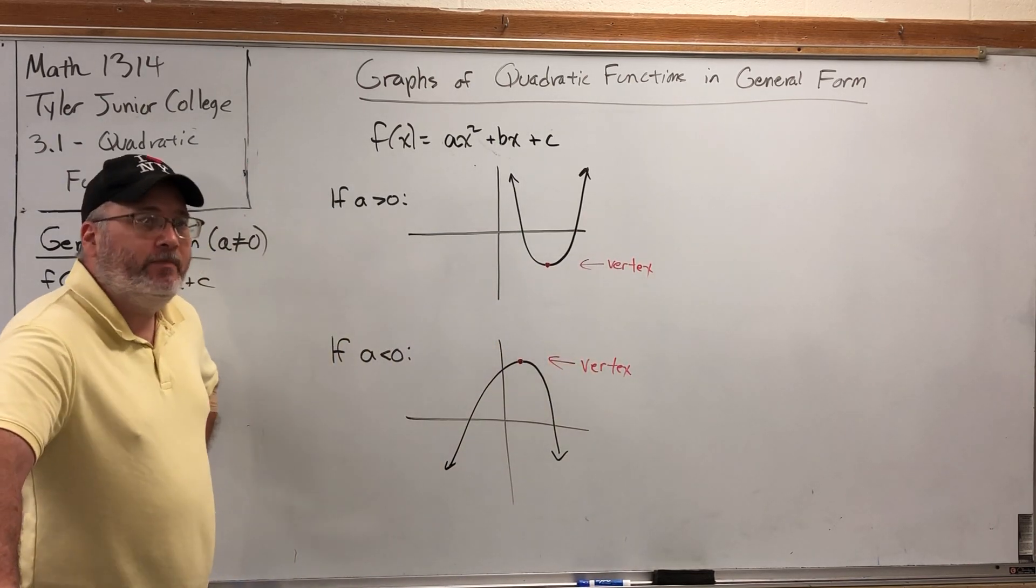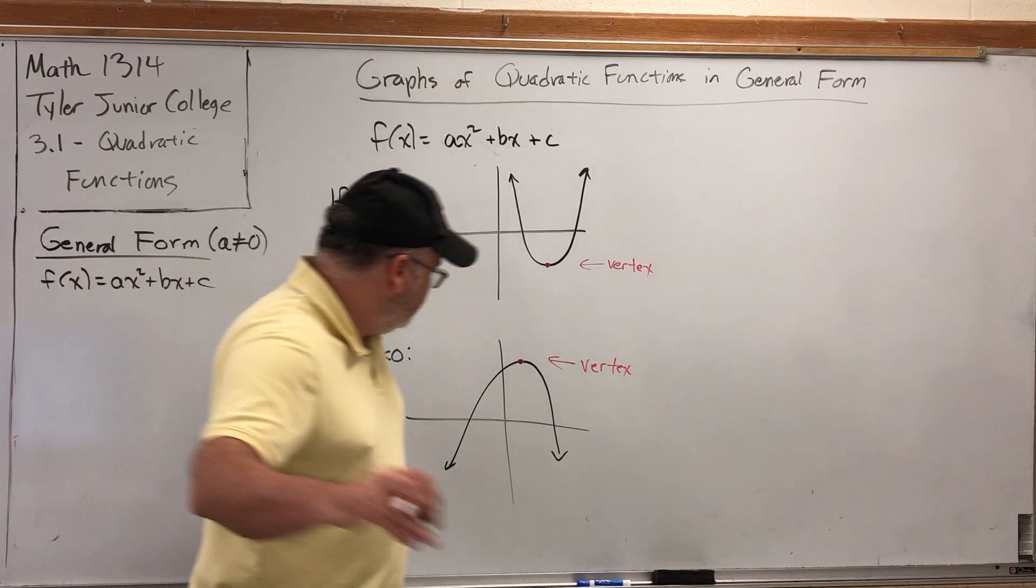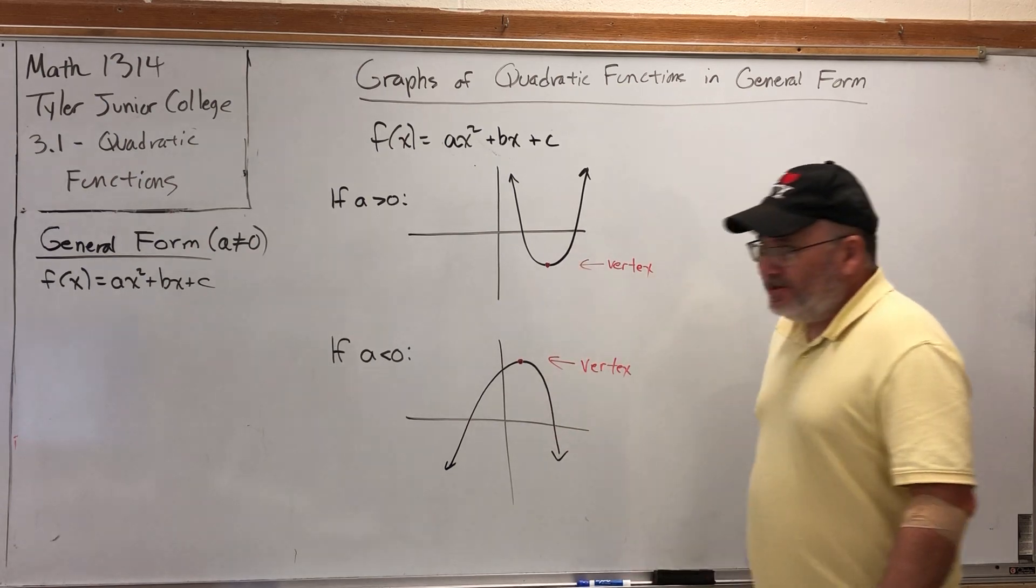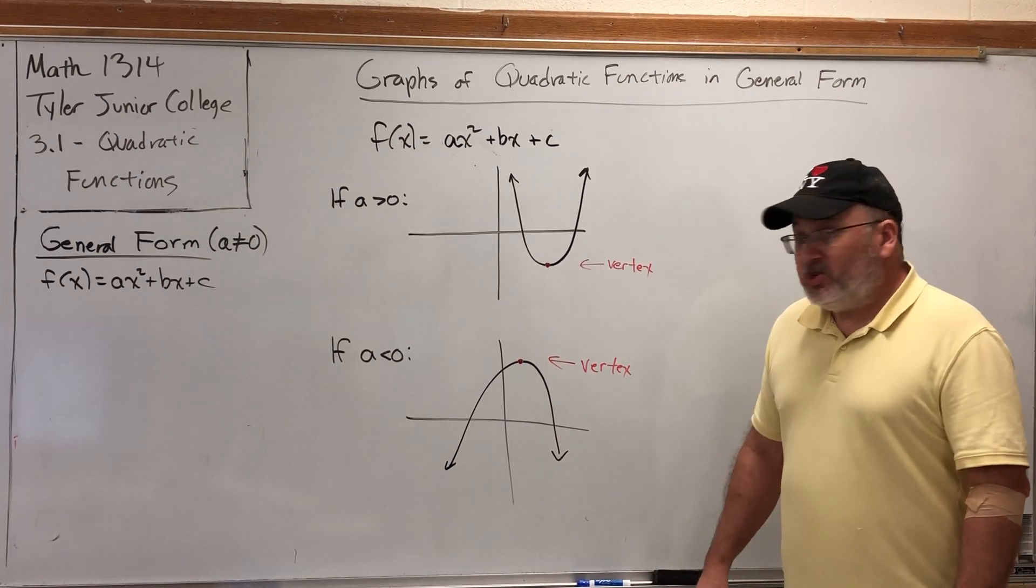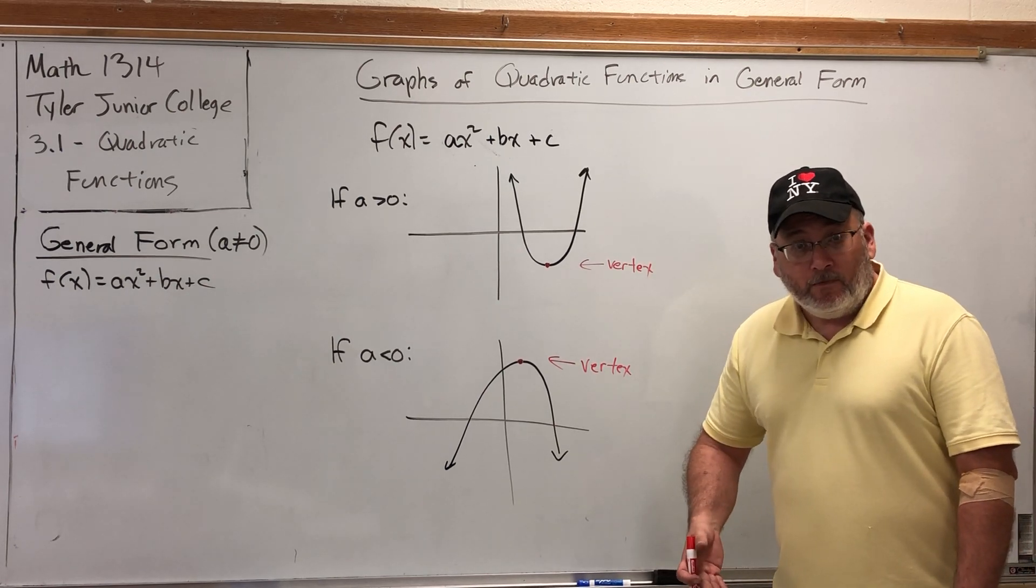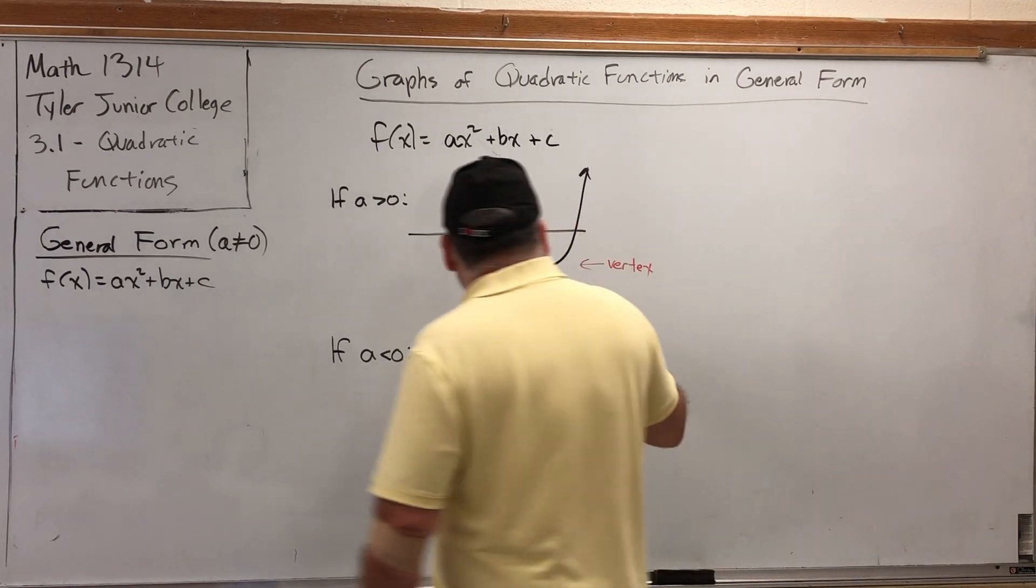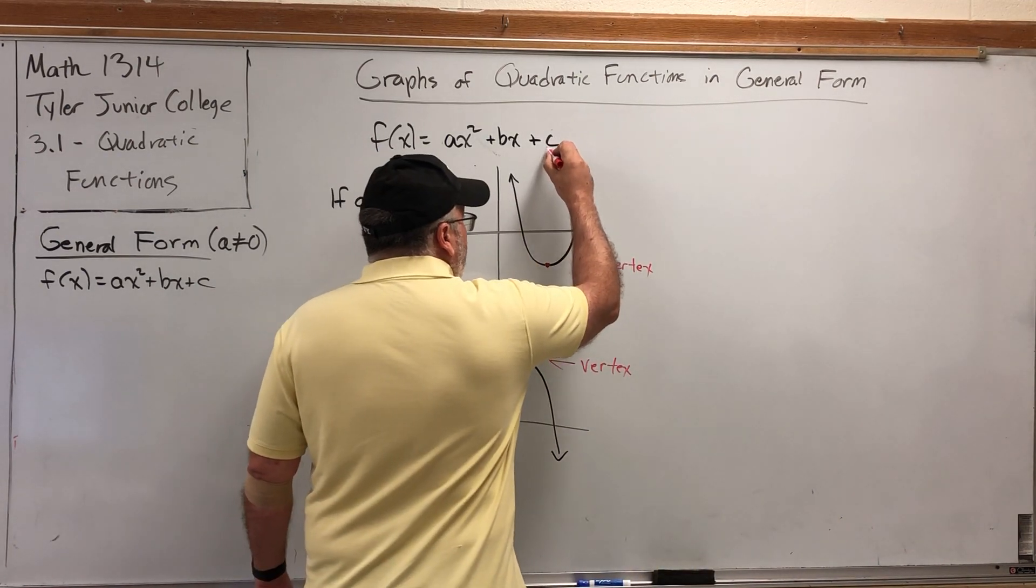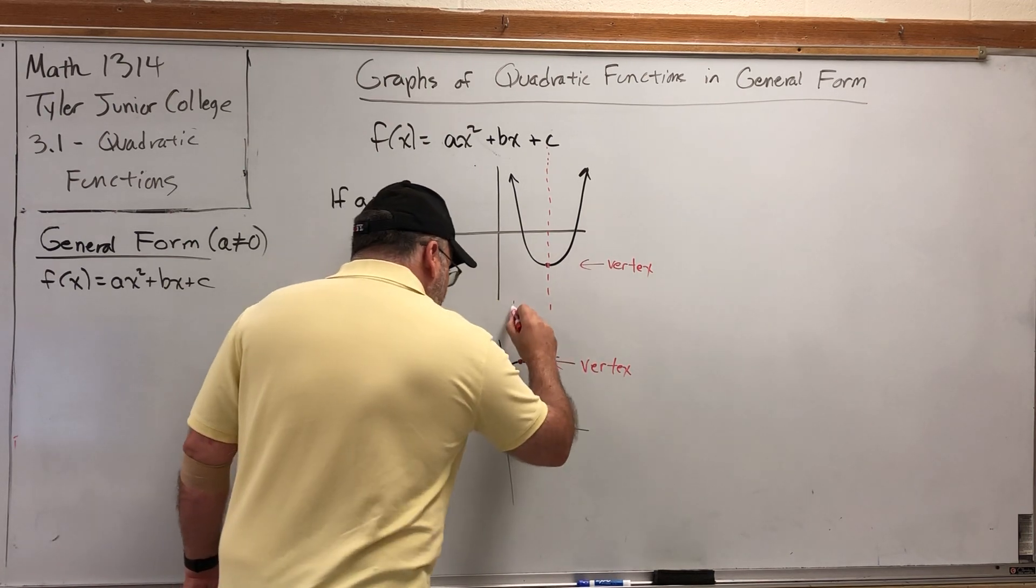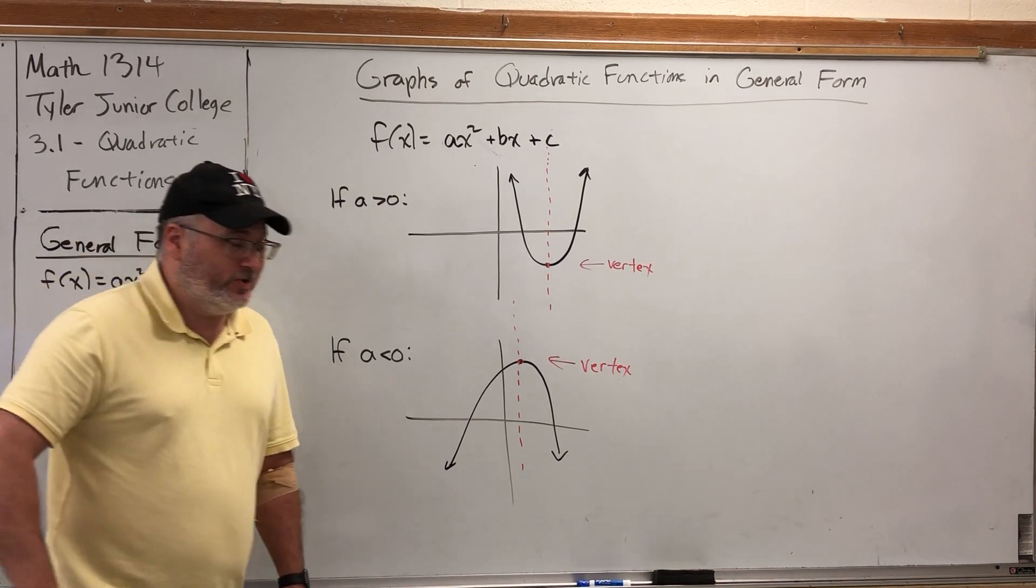All parabolas have vertices. Part of our job is to figure out where they are. Another thing about parabolas is they are symmetrical in the sense that there is a line of symmetry over which the right half is a mirror image of the left half. That line of symmetry drops straight through the vertex.